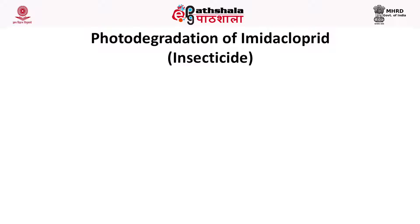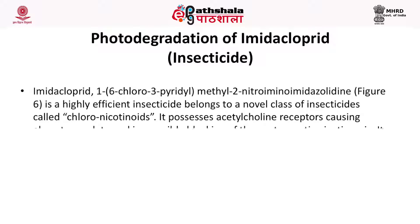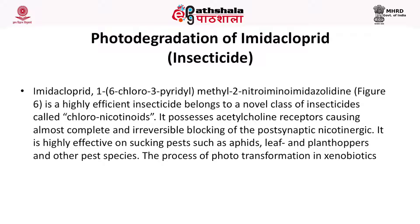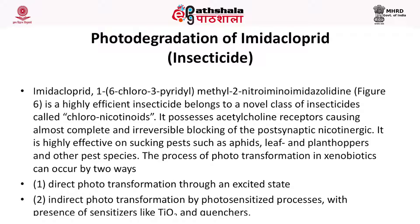The next example is imidacloprid insecticide. Imidacloprid is a highly efficient insecticide belonging to a novel class called chloronicotinoids. It possesses acetylcholine receptors causing almost complete and irreversible blocking of the post-synaptic nicotinic receptor. It is highly effective on sucking pests such as aphids, leafhoppers, plant hoppers and other pest species. The process of phototransformation in xenobiotics can occur by two ways: direct phototransformation through an excited state, and indirect phototransformation by photosensitized processes with the presence of sensitizers like TiO2 and quenchers.